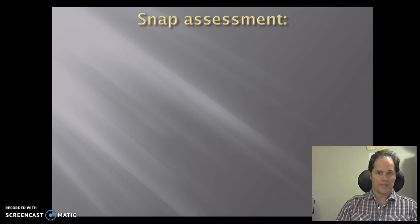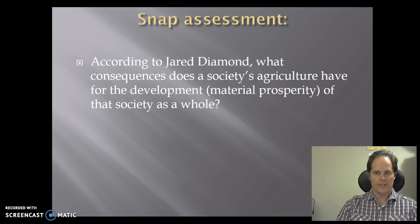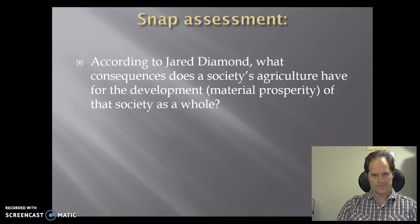I have a SNAP assessment question here that I used to begin class with. The question is: how does agriculture relate to the level of development and advancement of a society? Hopefully one of the things you've taken away from Jared Diamond thus far is that he's putting forth the idea that the agricultural surplus a society can create allows that society the opportunity to develop and become more complex.